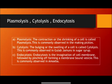Cytolysis is the bulging or swelling up of a cell. It is commonly observed in Gulab Jamun in sugar syrup — when Gulab Jamuns are left overnight in the syrup, you can see the shape changes as the Gulab Jamun bulges. Endocytosis is the invagination of the cell membrane followed by pinching or forming a membrane-bound vesicle, commonly observed in amoeba for grabbing its food.